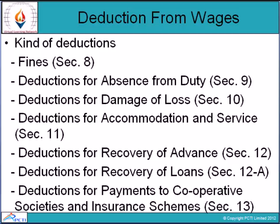Deductions for accommodation and services: any kind of house accommodation, amenities, or services supplied by the employer can be deducted subject to the following conditions. The amount of the deduction cannot exceed an amount equivalent to the value of the house accommodation, amenities, or services supplied. The amenities and services must be authorized by the state government by general or special orders. The state government is empowered to make rules governing deductions for amenities or services.